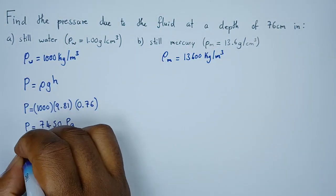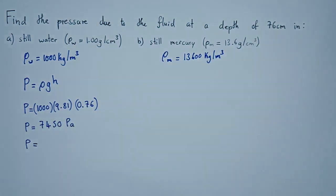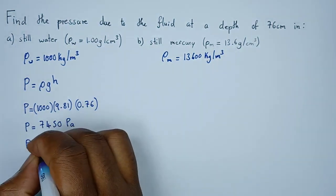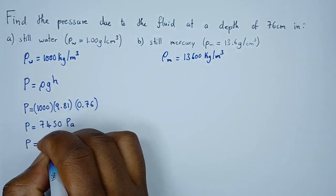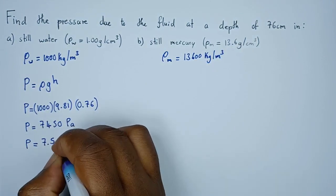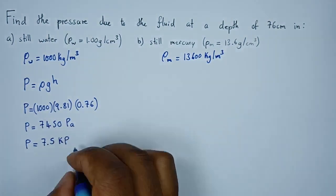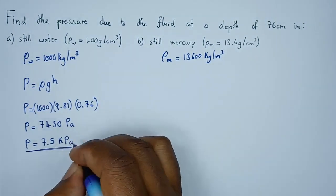We can write it in standard form as kilopascals. As kilopascals we can have 7.5 kPa. So that's the pressure for the water.